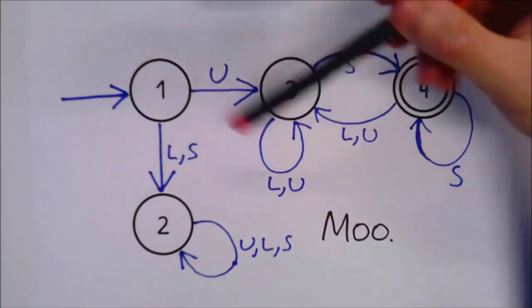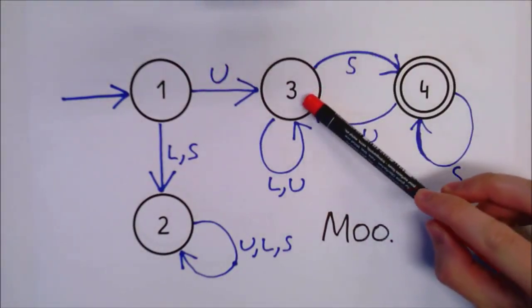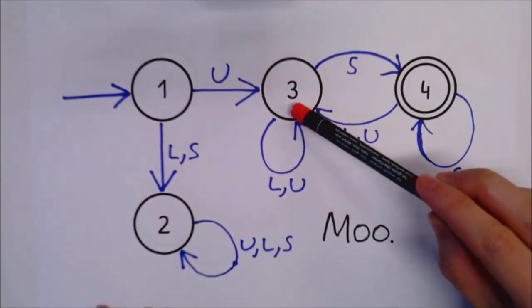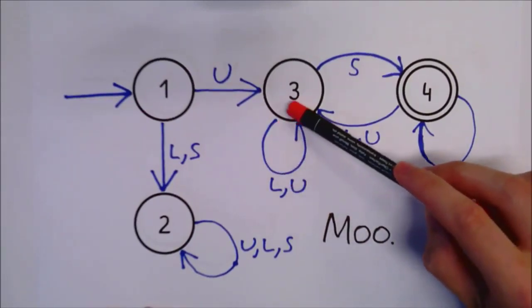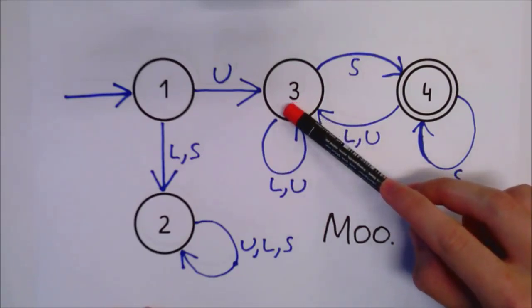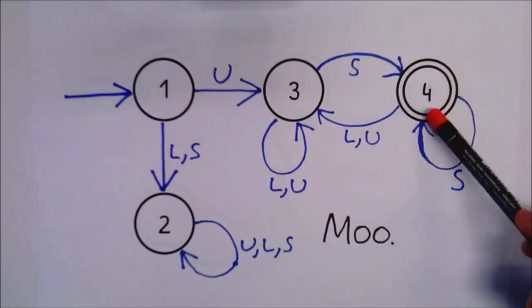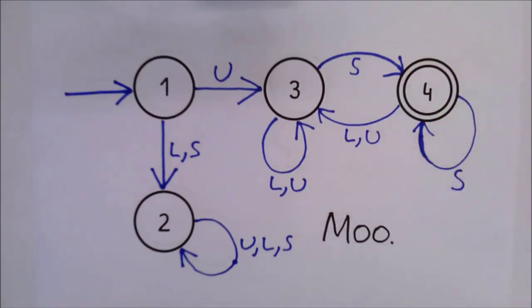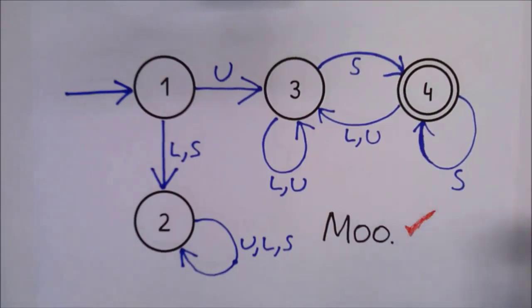The first character, M, is uppercase, so we follow the U transition to state 3. Then we have a lowercase o, so we follow the L transition, which loops around and back to state 3. Another lowercase o, so again we follow the L transition back to state 3. And lastly, we have a full stop, so we follow the S transition to state 4. So we've gone through the string of letters and ended up at state 4. Remember from before that this is an accepting state because it has two circles. Since we ended up in an accepting state, the sentence Moo is accepted. It does indeed start with a capital letter and end with a full stop.